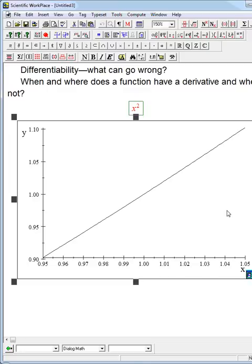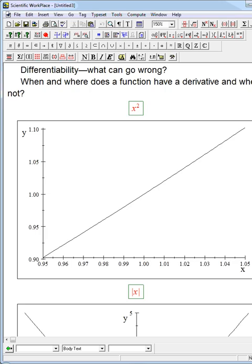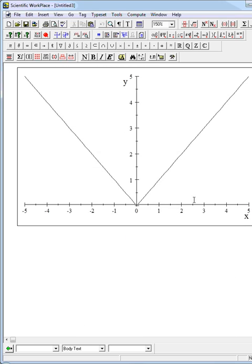The question is, is that always going to happen? Well, no. A very simple example is if we look at absolute value of x and we graph that, that's pretty much everybody's favorite example. If you zoom in on any point here or here, it's certainly going to be a straight line, but if you zoom in here, what's going to happen?